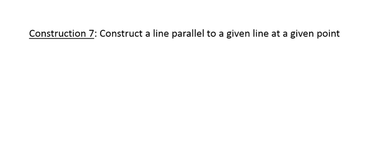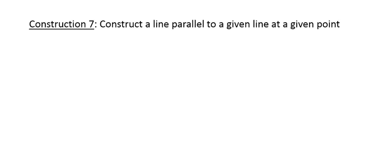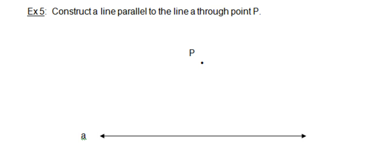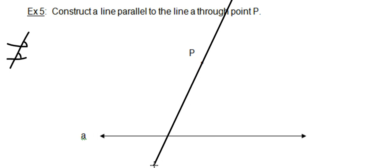Last construction for today — and for geometry. Construct a line parallel to a given line through a given point P. We'll use the fact that congruent corresponding angles mean lines are parallel. So we'll construct a pair of congruent corresponding angles. To do that, we need a transversal, so grab your straightedge and draw a line at any angle as long as it passes through point P.